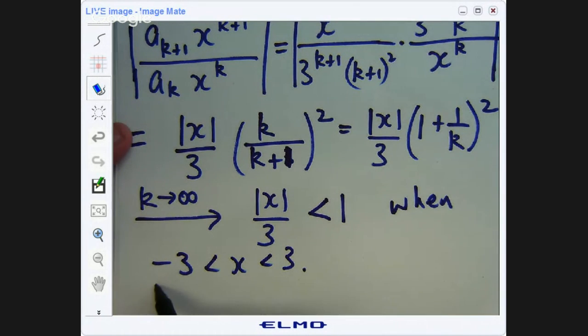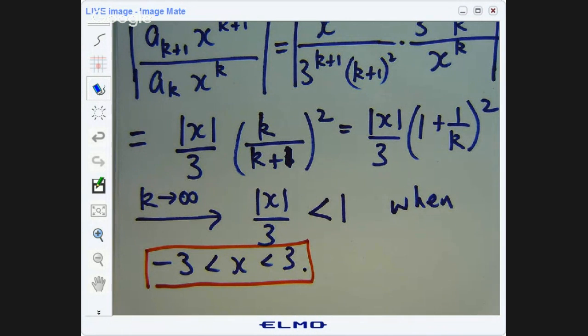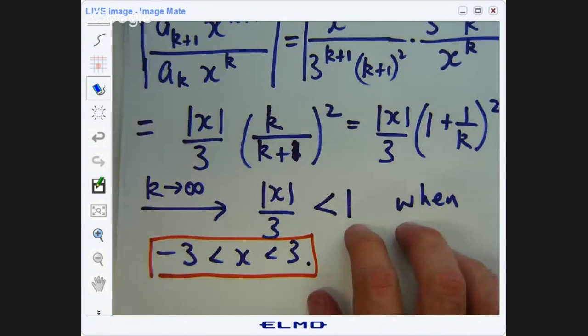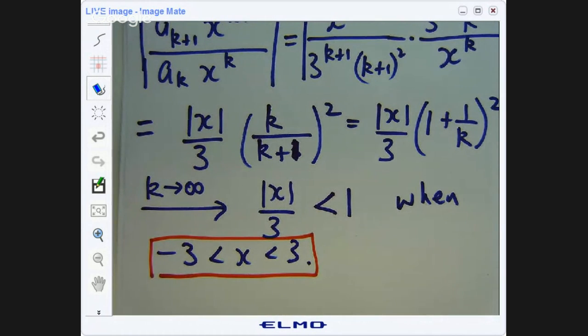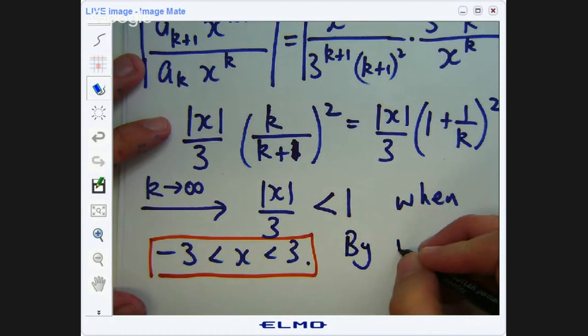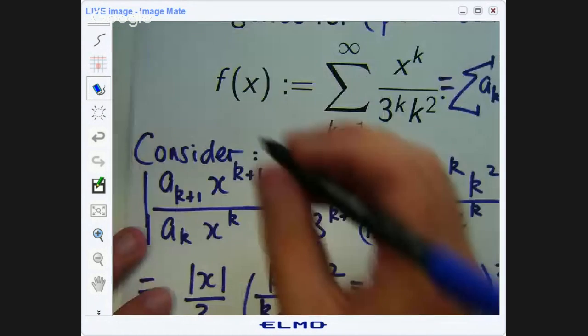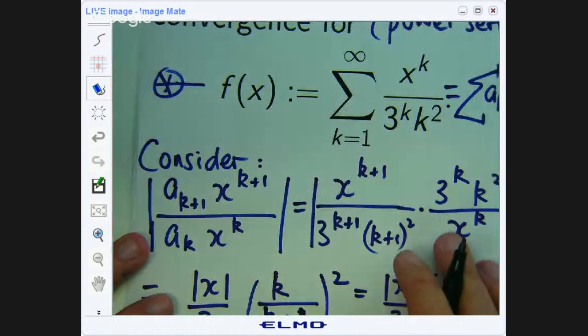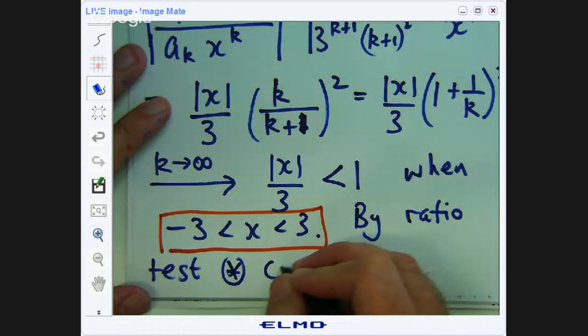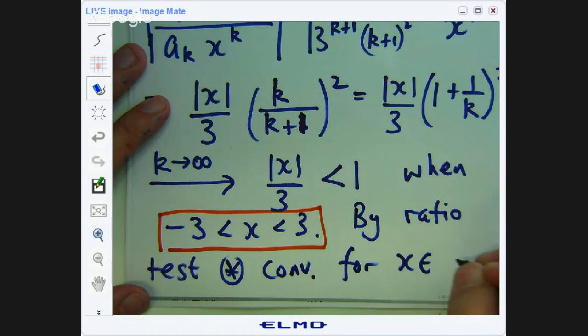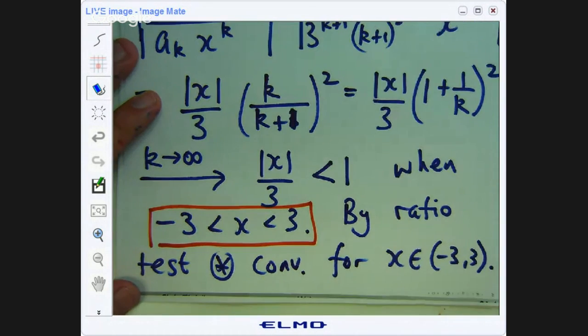This is an important step now. This is the beginning of our interval. By ratio test, let's call this star, star converges for x in this interval, negative 3 less than x less than 3.